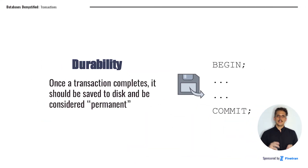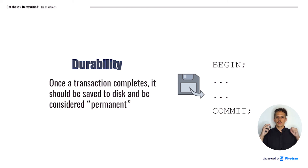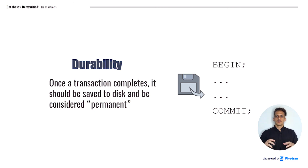The last important concept, the D in ACID, is durability. This is the most obvious feature for a database — this is the part where we save the data that we have. Once a transaction completes, it should be saved to disk, and then we can treat it as permanent. Before the transaction completes, before that commit happens, the changes are not saved to disk — they're not permanent. But as soon as we get to commit, that's when we write it to disk and the changes are stored, at least until the database makes other changes in the future.